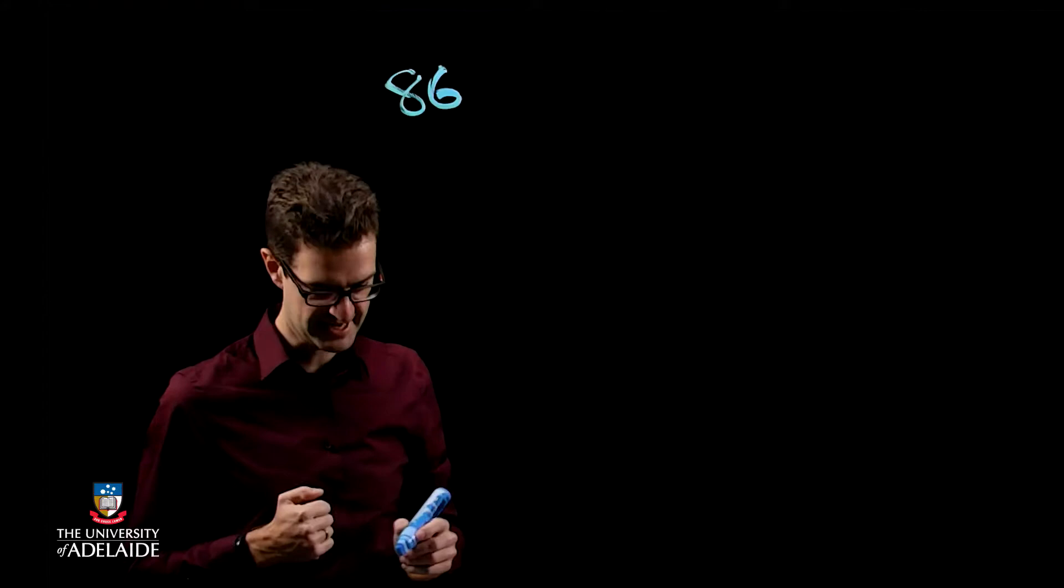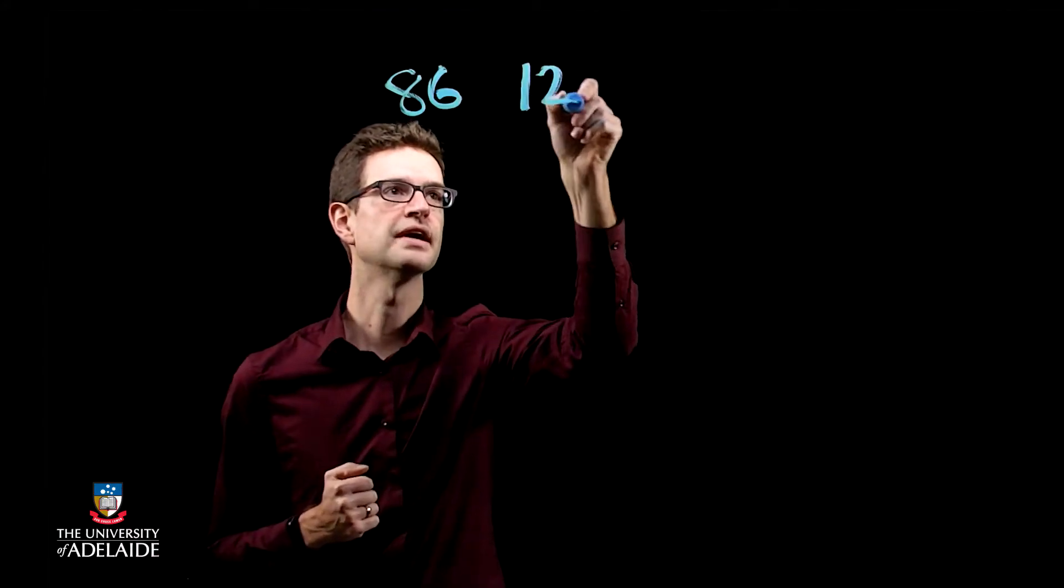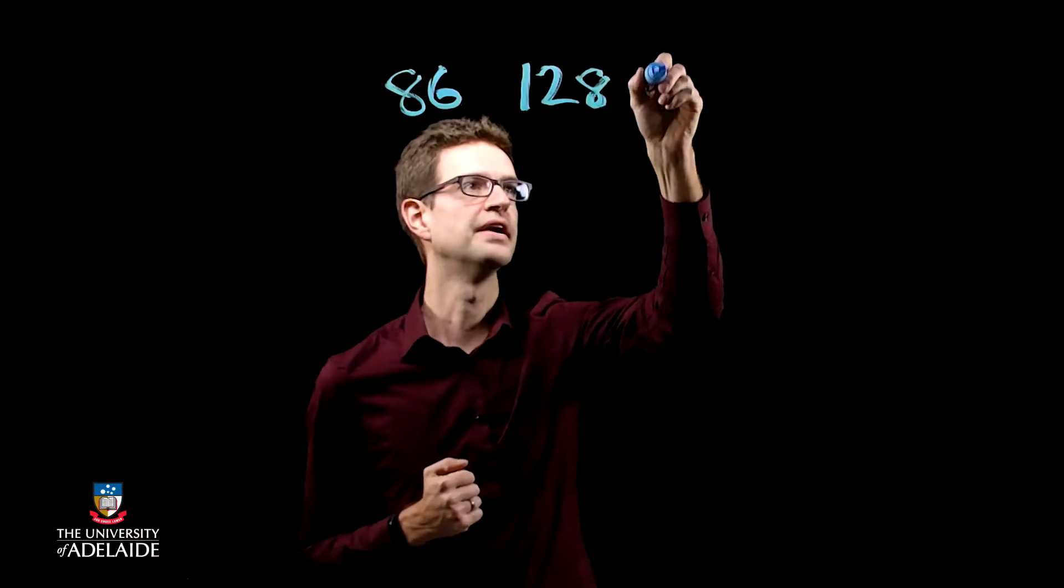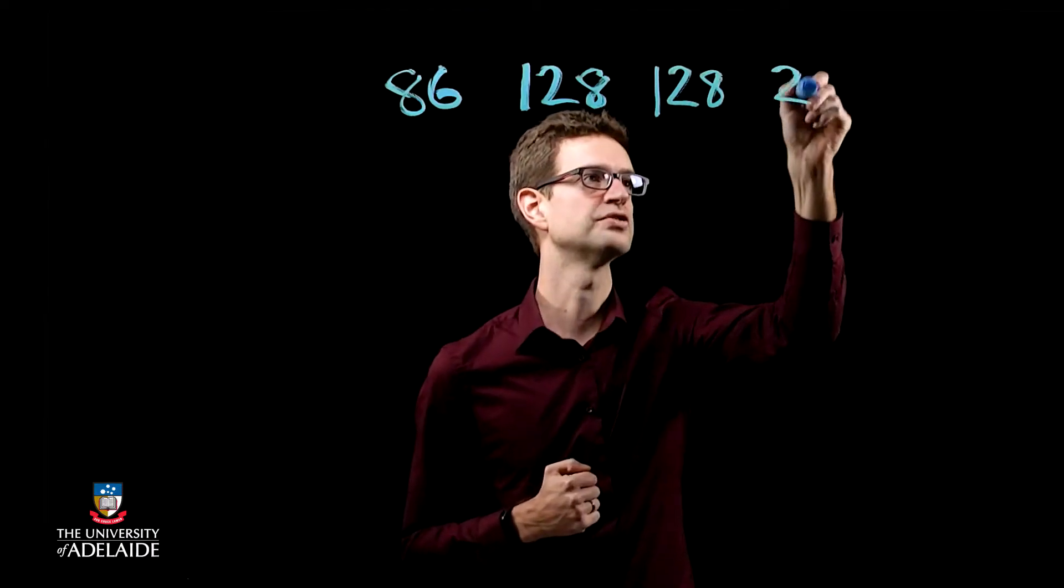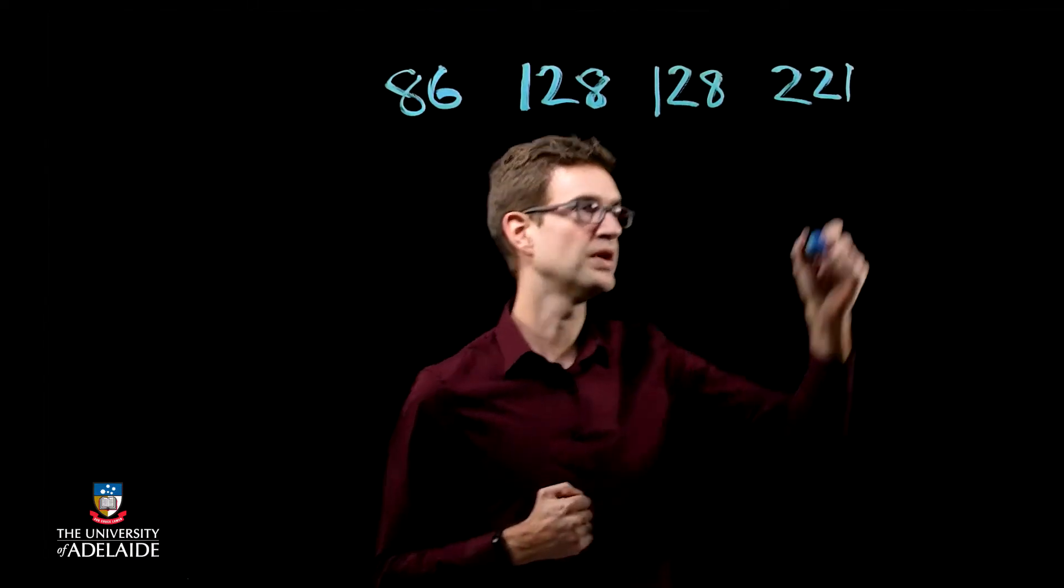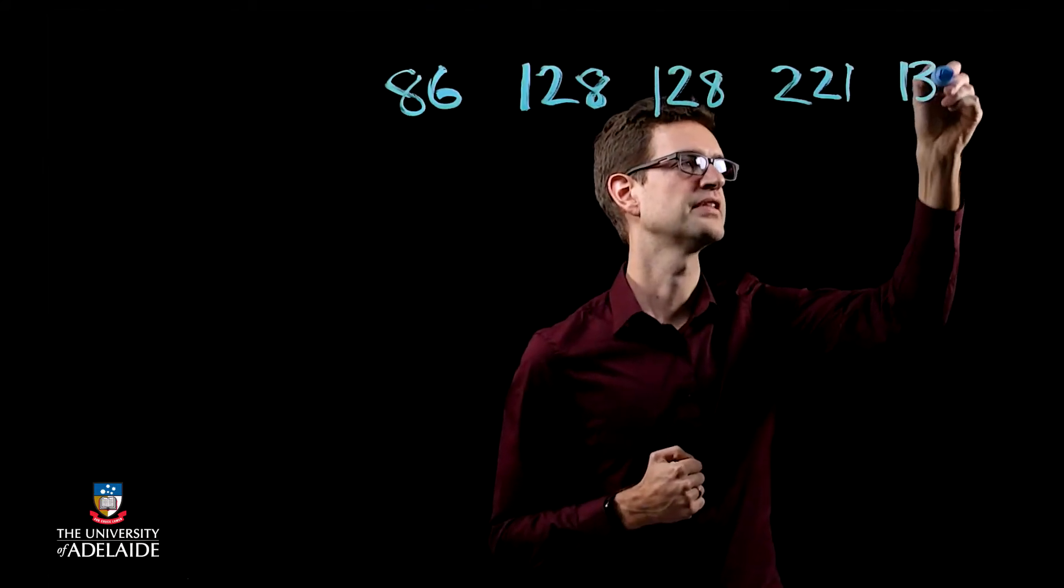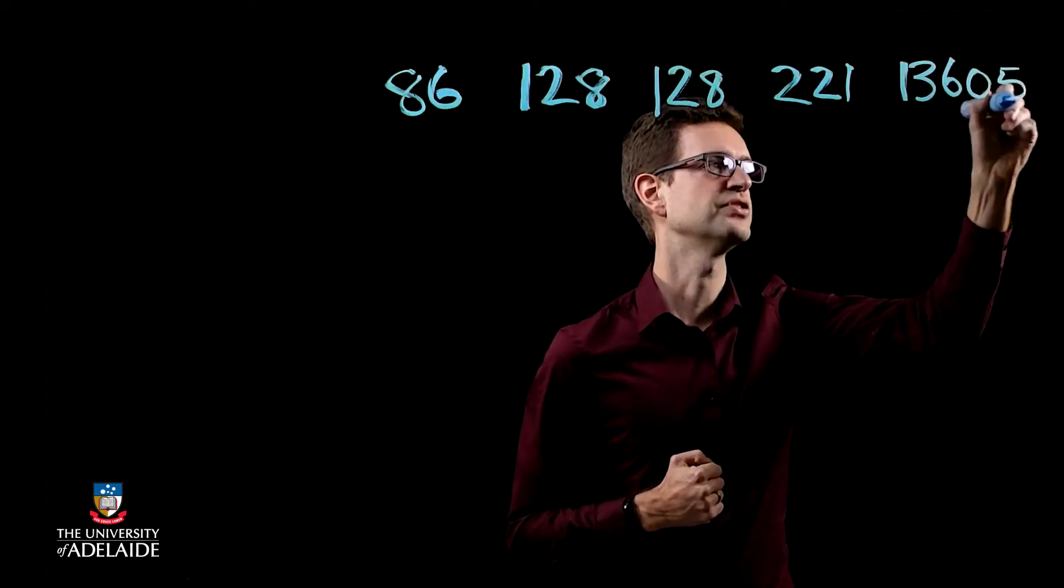So one person's got 86 friends, one person's got 128 friends, another person's got 128 friends, someone's got 121 friends, and then there's one very famous person who's got 13,605 friends.